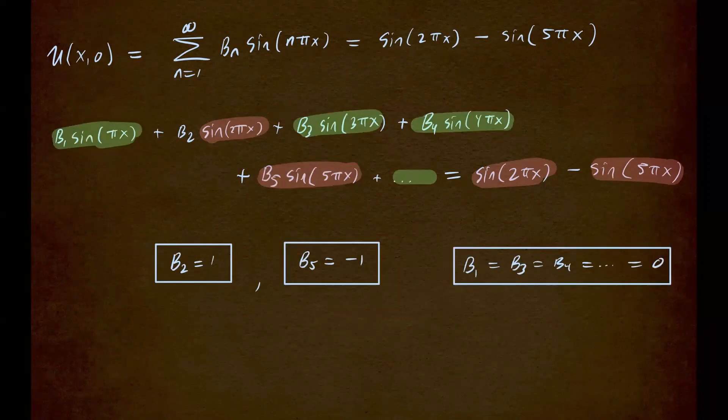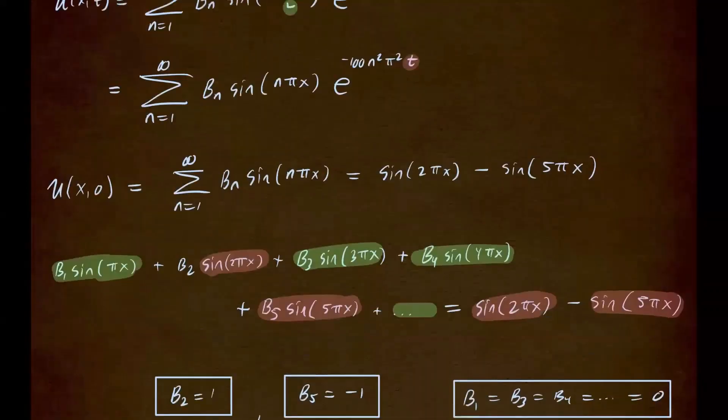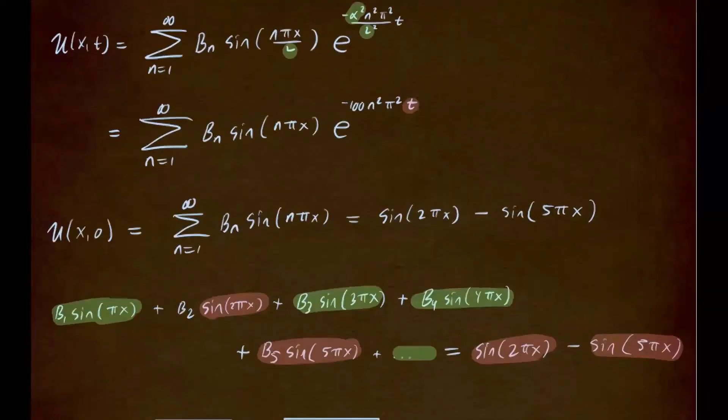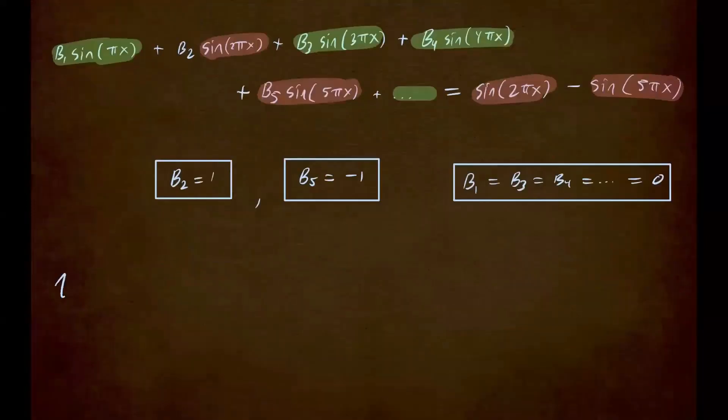So our solution will only contain n equals 2, so b sub 2, and n equals 5, b sub 5. So now if you go ahead and write out the solution, so we know that's the solution. So let's go ahead and write that out. So our u of x t is equal to—so only b sub 2. So when n equals 2, we have a solution.